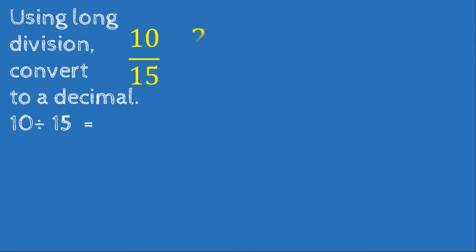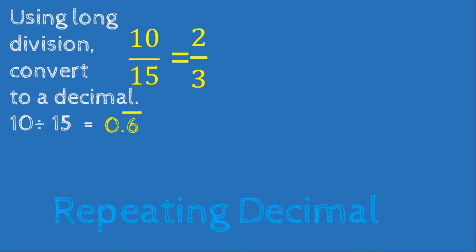Using long division, convert 10 over 15 to a decimal. We can simplify first: 10/15 equals 2/3 (dividing both by 5). Since we already know 2 over 3 as a decimal is 0.6 continuous, we know 10 over 15 equals 0.6 repeating — 0.6666 on and on. This is a repeating decimal.